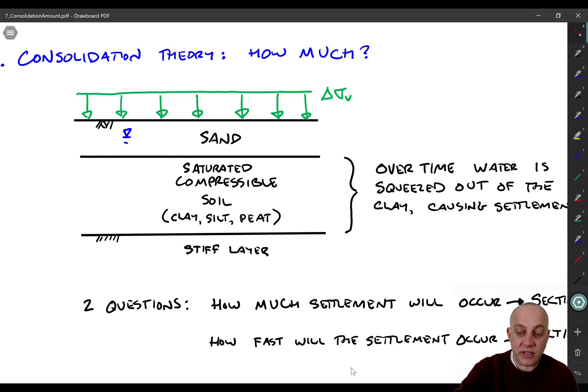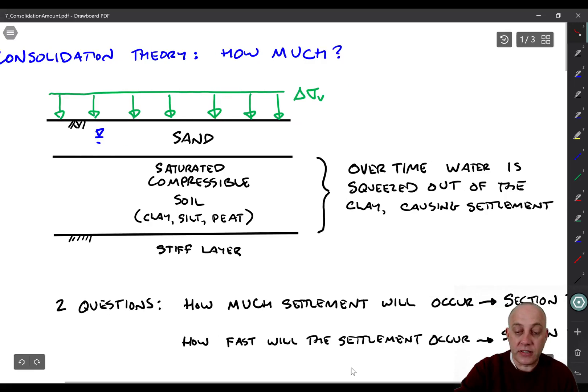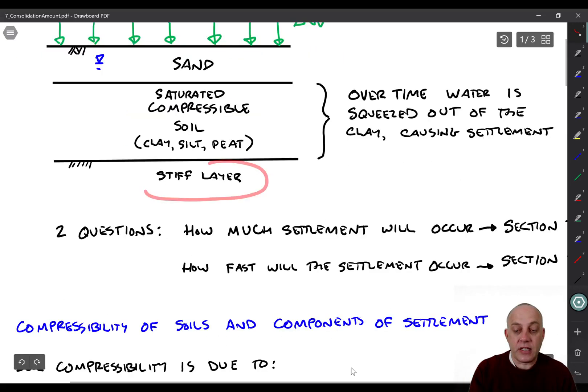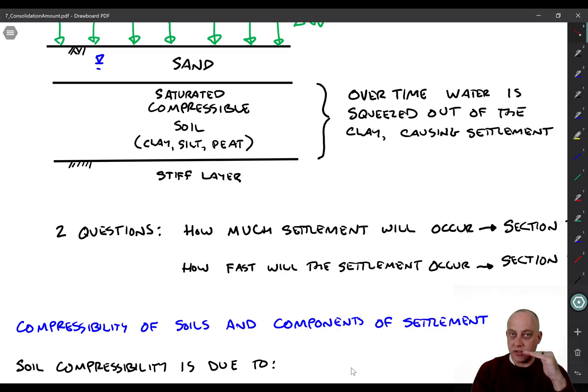And then there's a stiff layer here at the bottom, just to indicate that there's not going to be any more compression if you go down, right? We have to integrate strains over some depth range down to a stiff layer. Below that layer, we don't worry about strain anymore. It's not going to contribute to settlement.